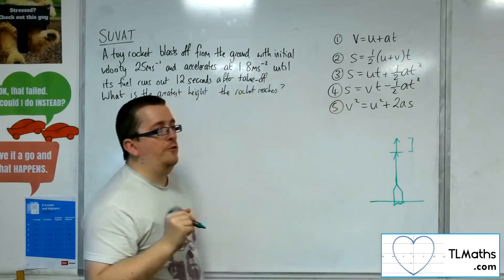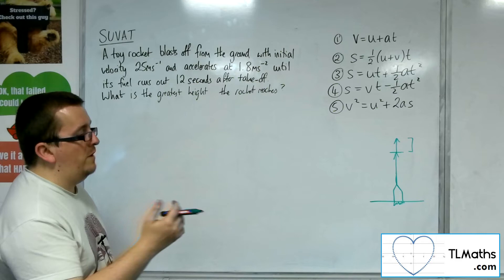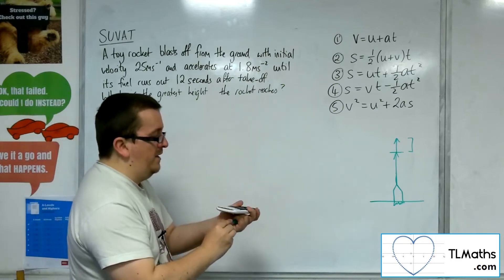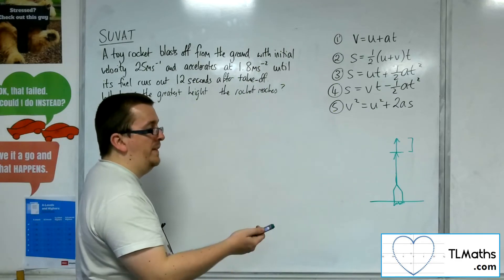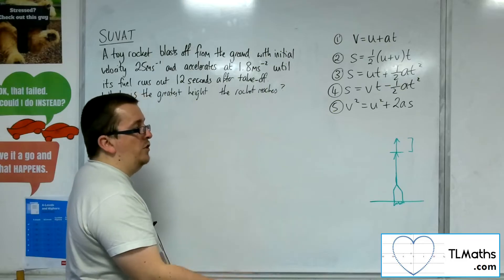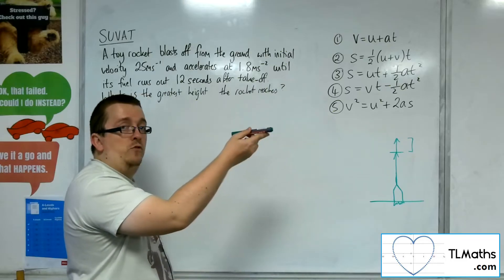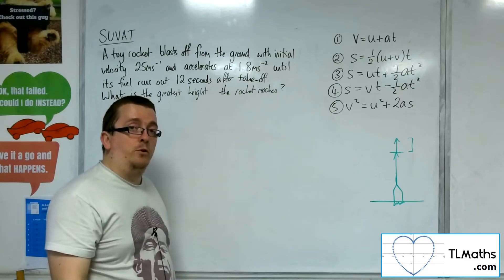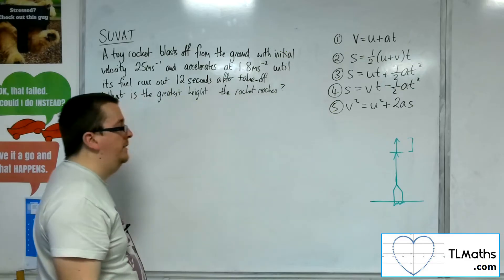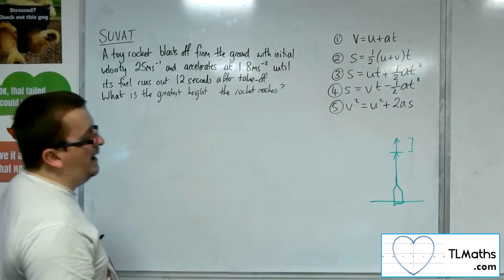So this is going back to the idea of throwing the ball up in the air, or throwing the pen up in the air. There's going to reach a point where the velocity is zero and then the rocket is just going to fall back to Earth. So this is the situation that we have.